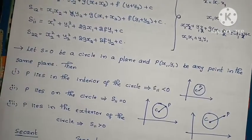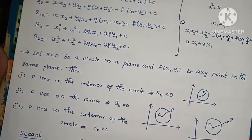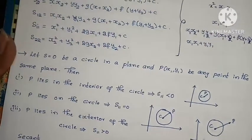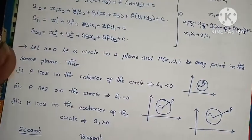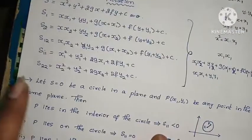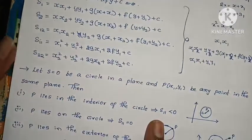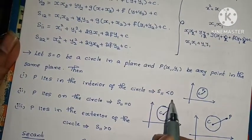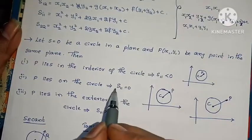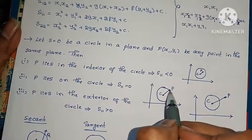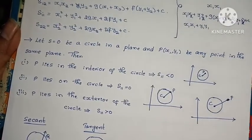Now, what is the point P? There is a circle with center C. We have a point P at (x1, y1). P lies inside or outside the circle. We have a value of S11. The formula is: S11 = x1 squared plus y1 squared plus 2gx1 plus 2fy1 plus c. If that value is less than 0, P lies in the interior.